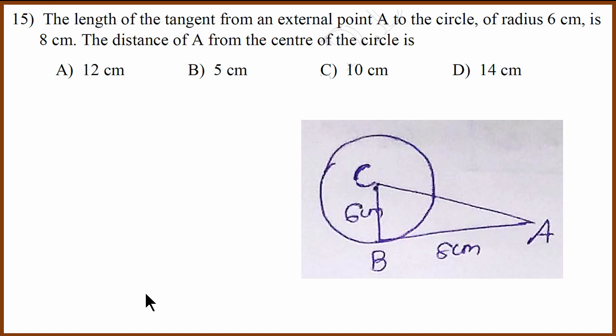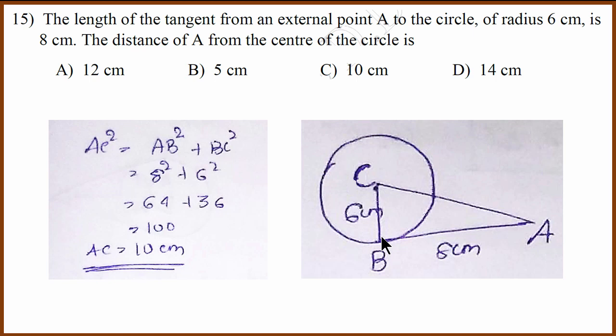Now 15th question. So they have given length of the tangent as 8 cm. Radius is 6 cm and we have to find the distance from the center. Now this is a Pythagoras theorem question again because this angle is 90 degree. So you can show that AC equals 10 cm. The correct answer is C.